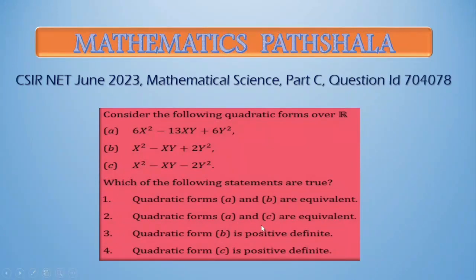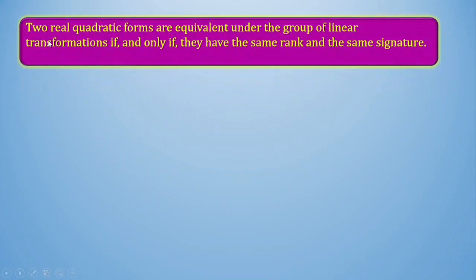To check whether the given quadratic forms are equivalent or not, we need to know when two quadratic forms are equivalent. Two real quadratic forms are equivalent under the group of linear transformations if and only if they have the same rank and the same signature.